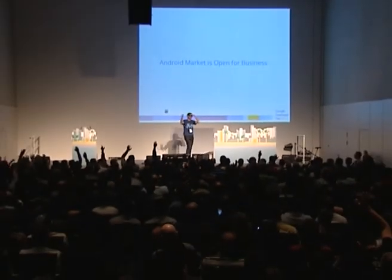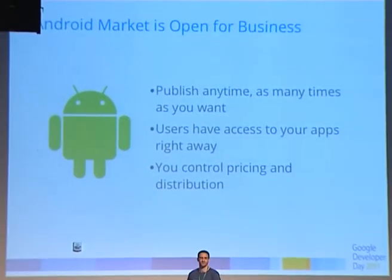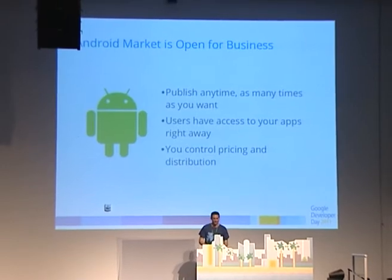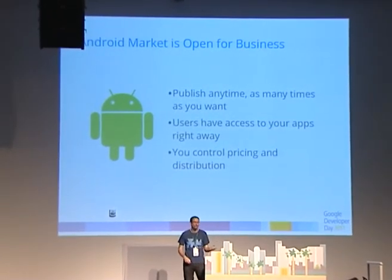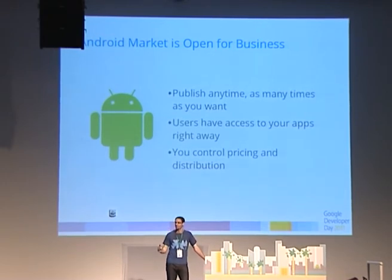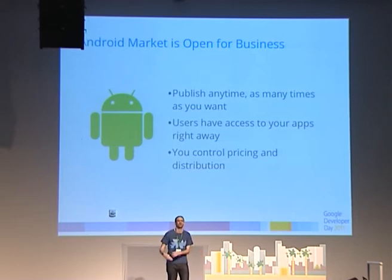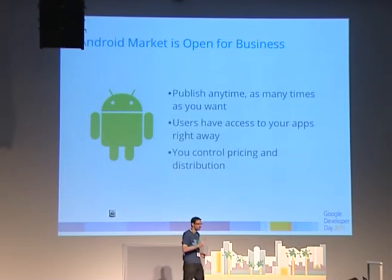The Android market is open for business. How many of you have published an app in the Android market? You know the flow — you can publish as many times as you want, update as many times as you want. Users like this; they like feeling loved. You control the price and distribution; it's all instant. If you get a bug report, you can take that device out of your distribution list, create an update, and push it into the market. Within a couple of hours, it's live on all those devices. You don't have to wait a week for it to get verified.